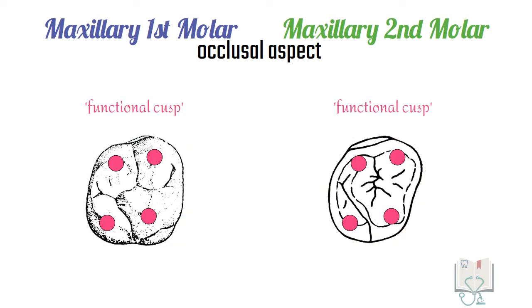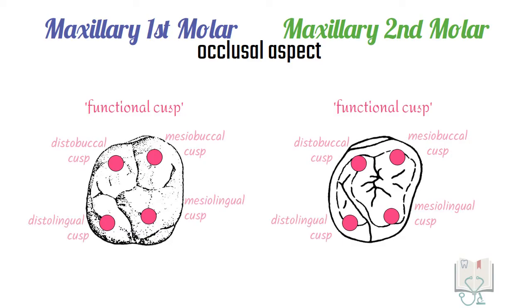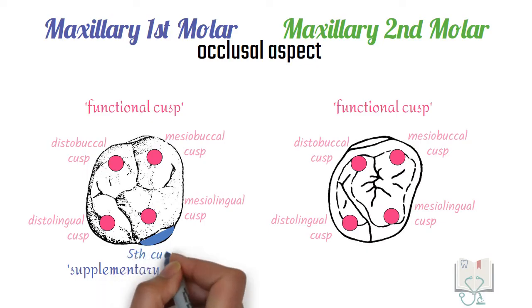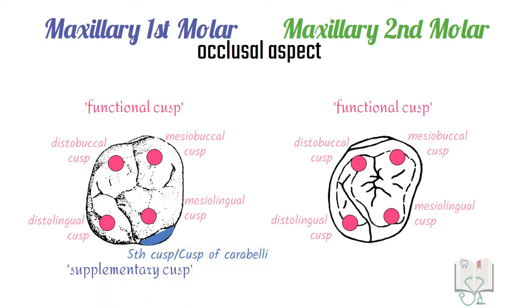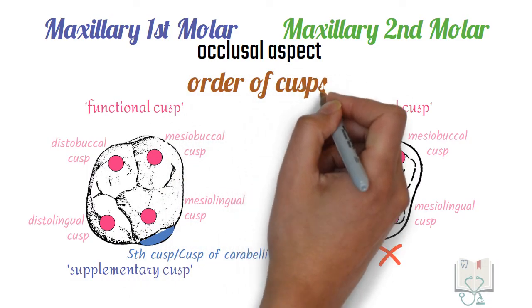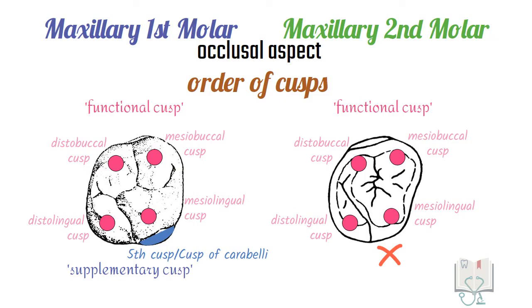Both molars have four functional cusps: mesiolingual cusp, mesiobuccal cusp, distobuccal cusp, and distolingual cusp. Additionally, maxillary first molar has one supplementary cusp — the fifth cusp or cusp of Carabelli — while second molars have no supplementary cusp. The order of cusps according to their size is also slightly different: the mesiolingual cusp is the largest, then the mesiobuccal cusp. The difference comes in third and fourth position — in first molars the distolingual cusp is larger than the distobuccal cusp, but in second molars it's the reverse.